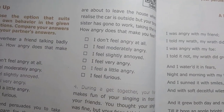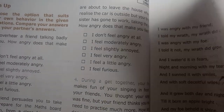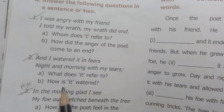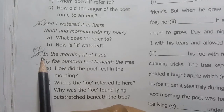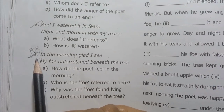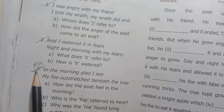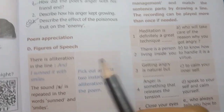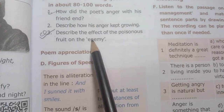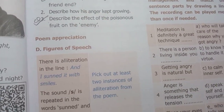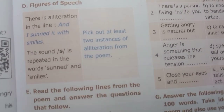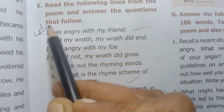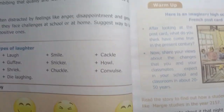Poem: A Poison Tree. Page number 40. First one important, second one important, third one important — that is a previous year half-yearly question, asked two times. Page number 41. The poem detail — 'I was angry with my friend.' This is a half-yearly question paper question.